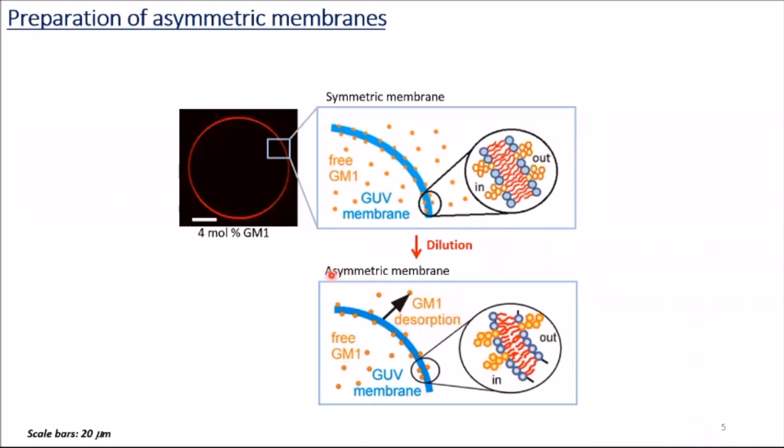GM1 is an amphiphilic molecule, so slightly soluble in water. Here, all the GM1 content is in equilibrium. However, with the dilution, GM1 can be desorbed from the membrane.